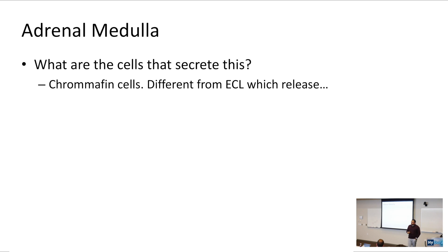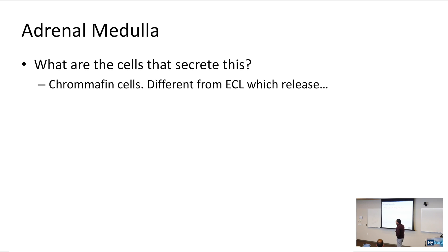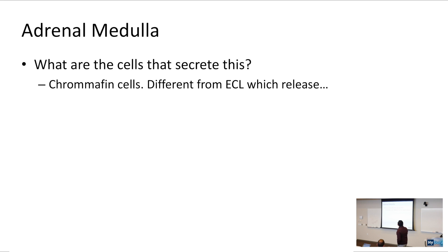Let's talk about the adrenal medulla — it's all about catecholamines. What are the cells that secrete norepinephrine and epinephrine? Those are going to be chromaffin-like cells, which are different from enterochromaffin-like cells in GI physiology, which release histamine. Chromaffin-like cells are small blue cells derived from neural crest.